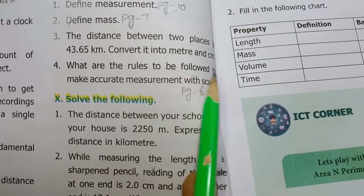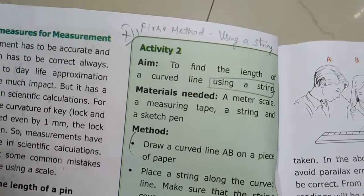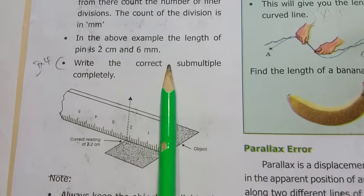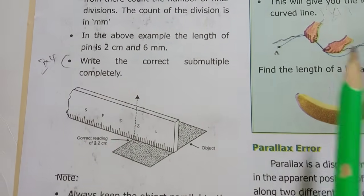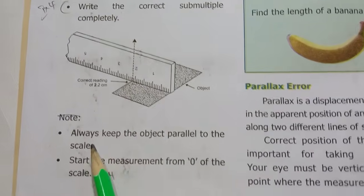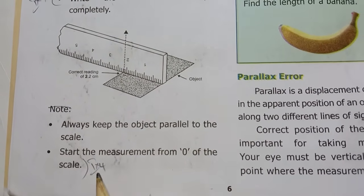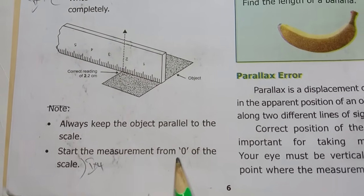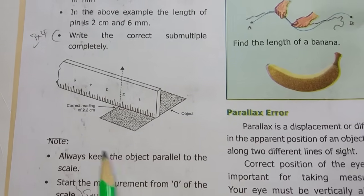Fourth one — what are the rules to be followed to make accurate measurement with a scale? Page number six. Always keep the object parallel to the scale; start the measurement from zero of the scale; write the correct sub-multiple completely.